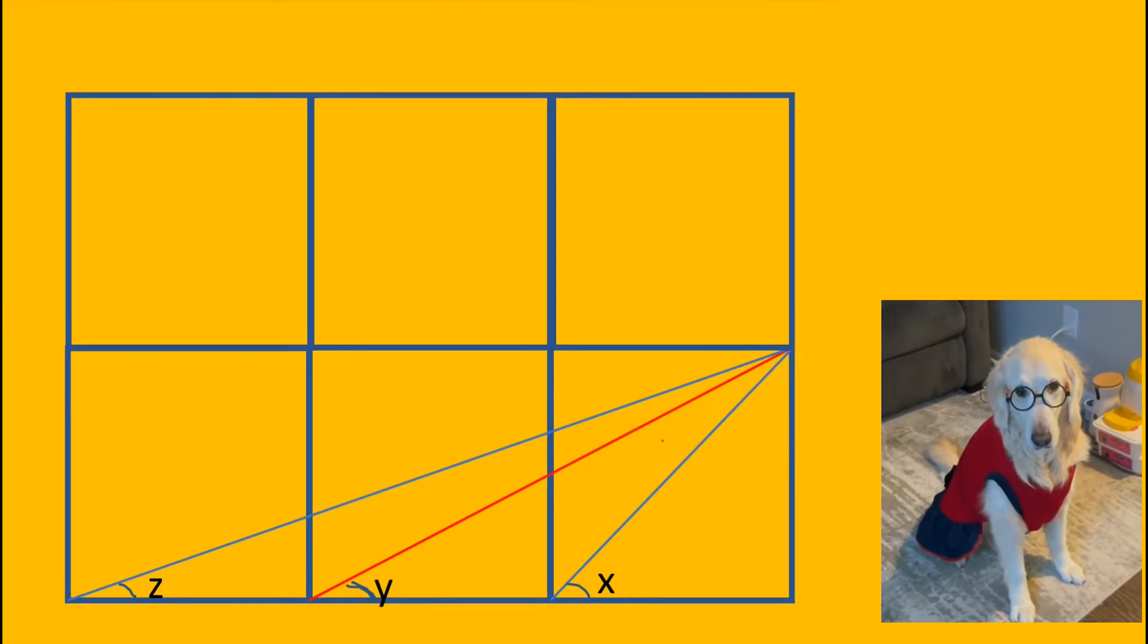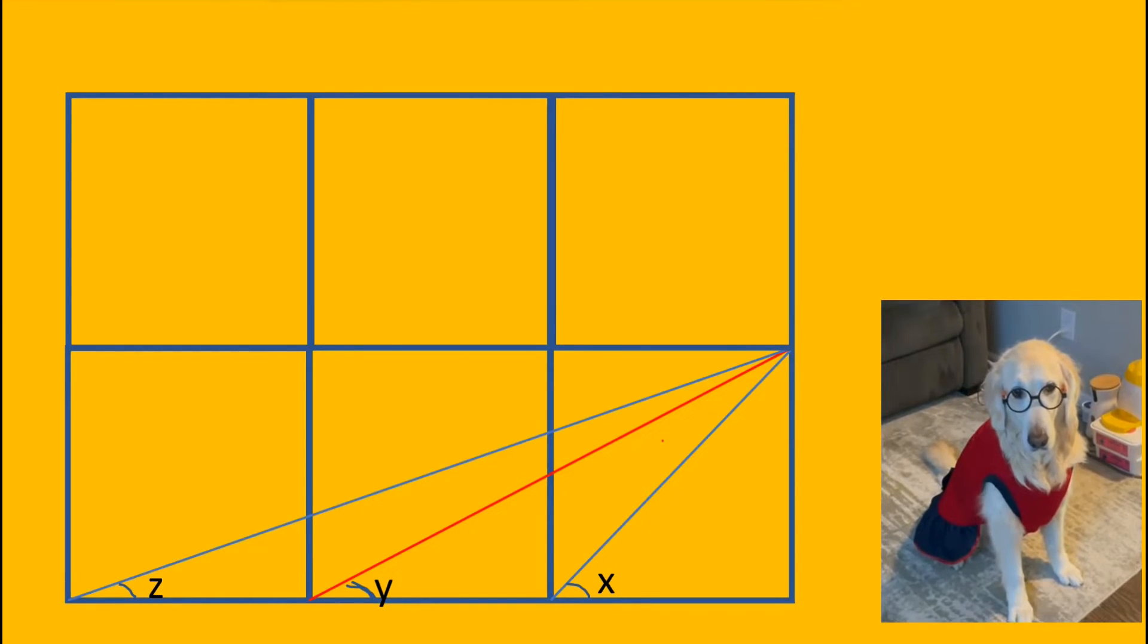We add three more equal squares to the three equal squares in the question. This red line will be our first step to solve this question.